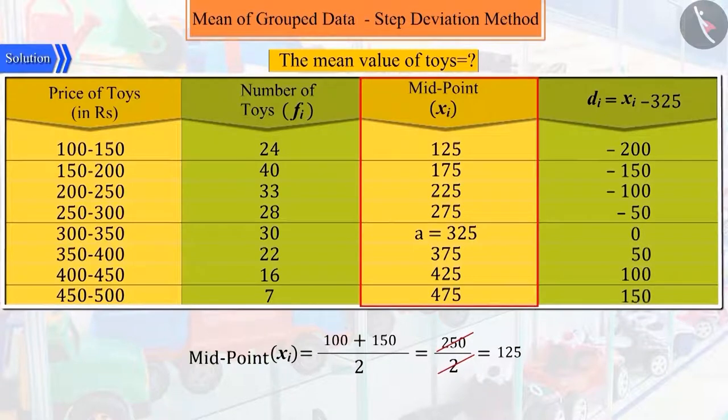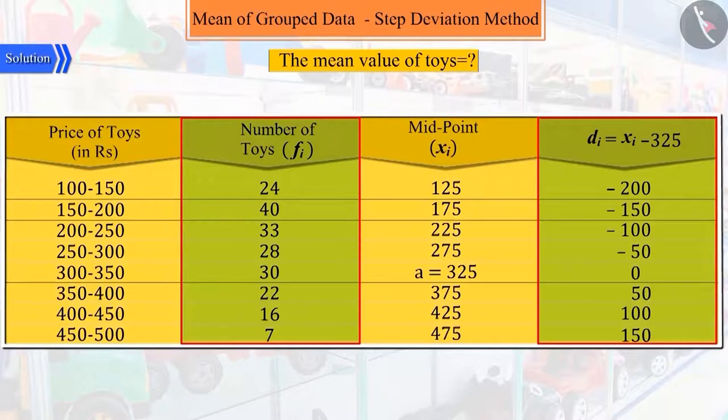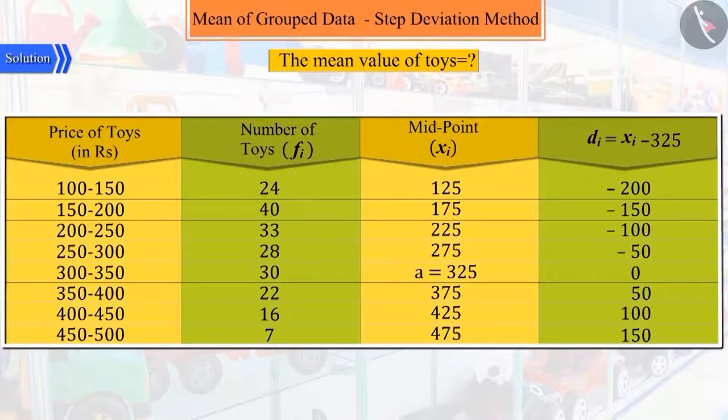And then we multiply the fi and di. But here, we see that the values of di are large enough to cause an error. So to avoid errors, we will study another method here.